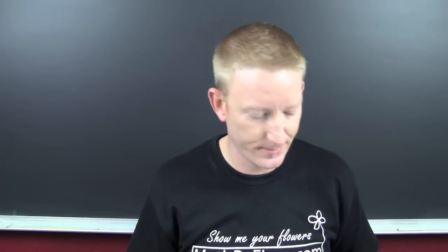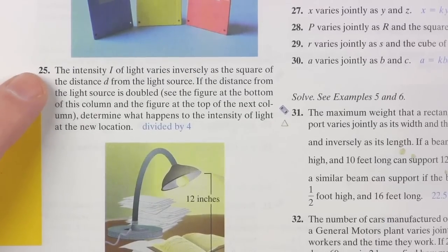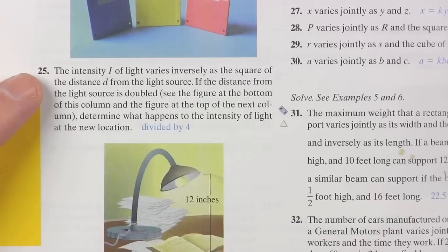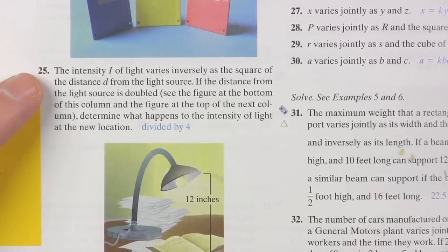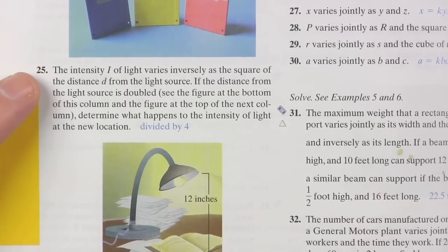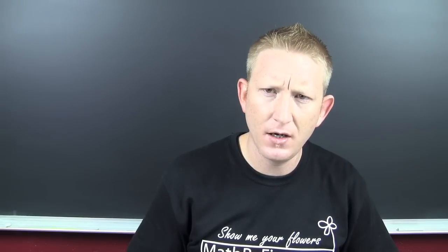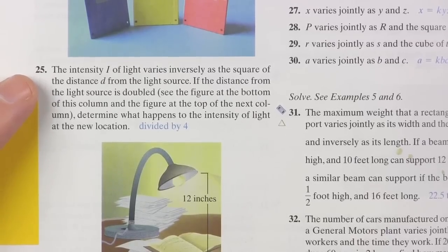Here's another inverse problem. The intensity I of light varies inversely as the square of the distance d from the light source. And they give you a snazzy picture. If the distance from the light source is doubled, twice as far, determine what happens to the intensity of light at the new location.